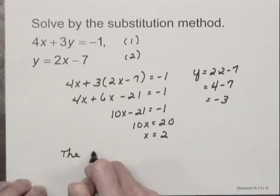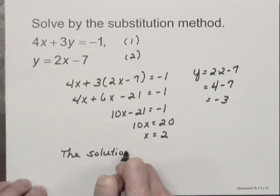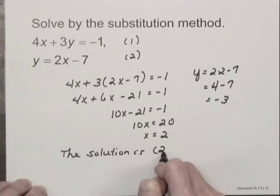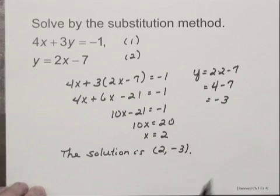So we can say that the solution of this system of equations is the ordered pair 2, negative 3.